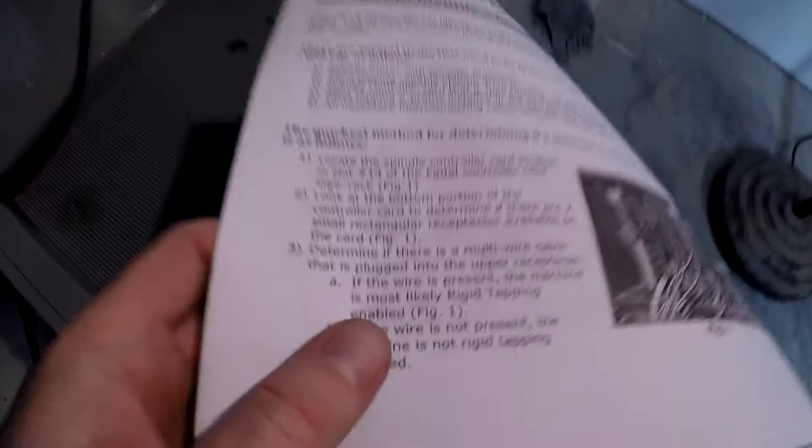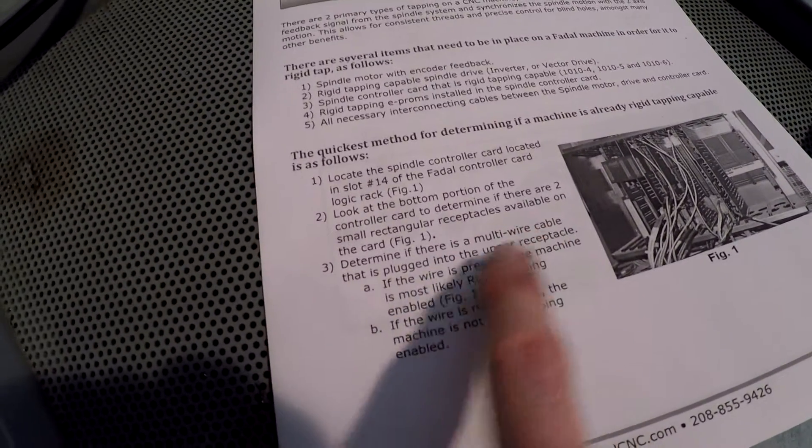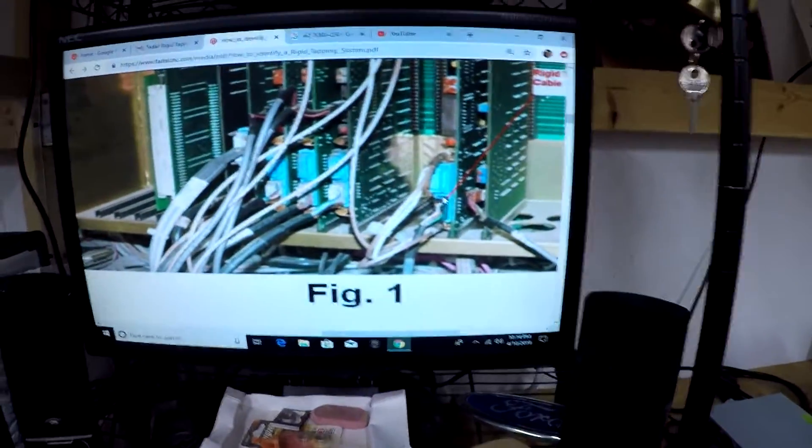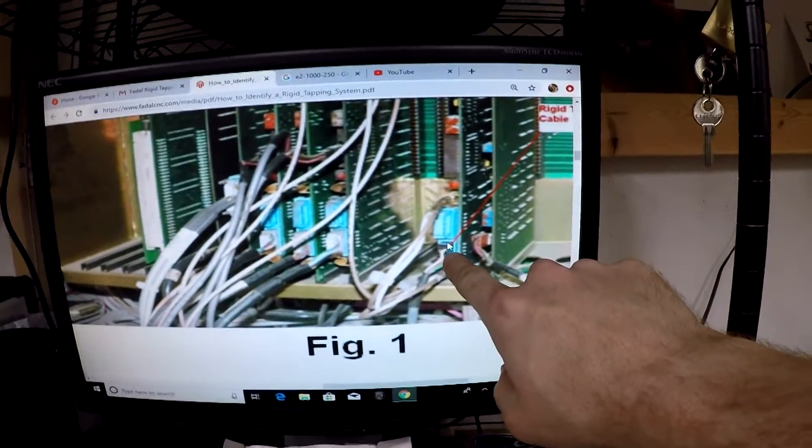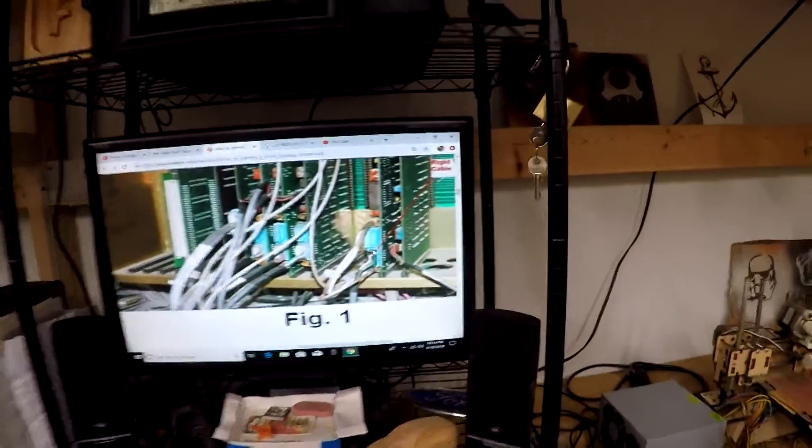And then they also say the verbiage says, step three, check the multi-wire cable plugged into the upper receptacle. Well, there's no plug here, but there's a plug here. And I went and looked at the actual PDF of this. And if you go in their instructions, they actually have the arrow that says rigid tapping capable. It actually goes down here. So that looks like mine. So that lines up to what they say.